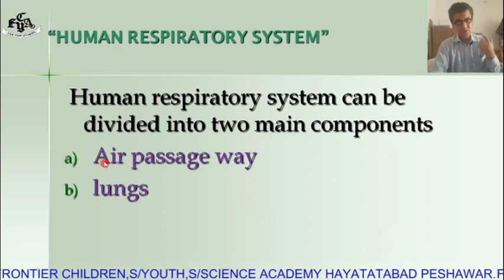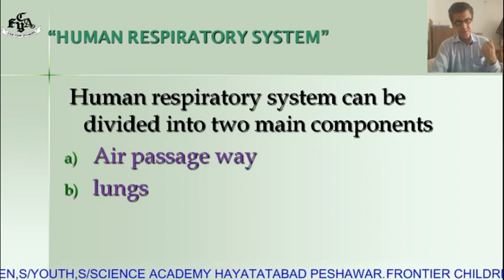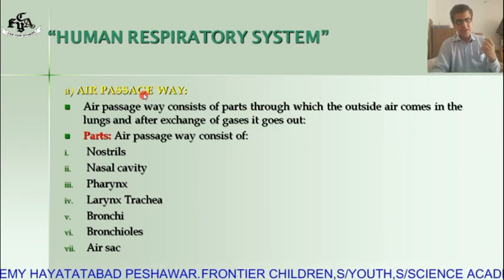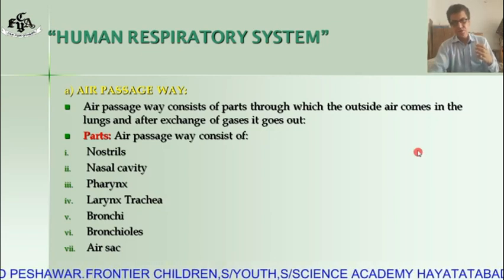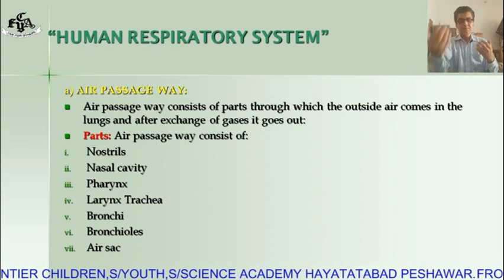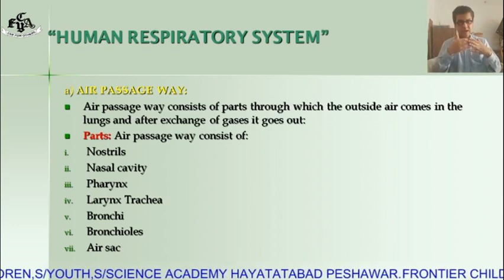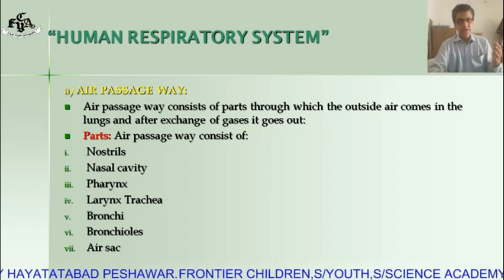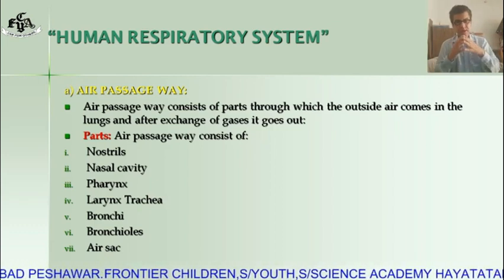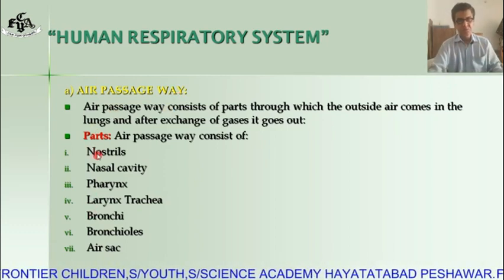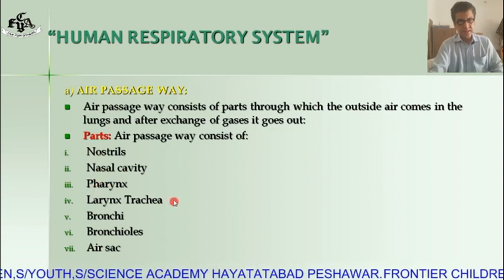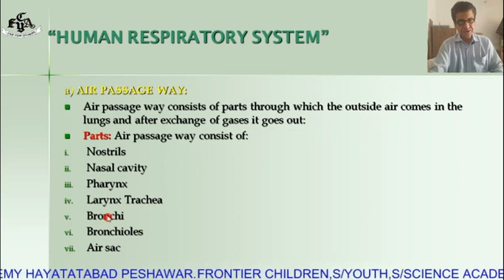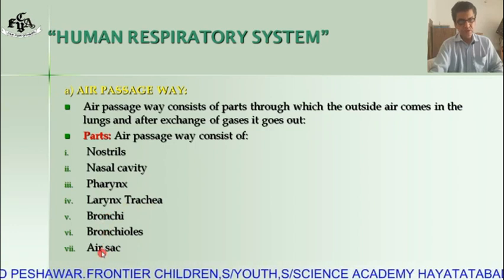First of all we will discuss the air passageway. The air passageway consists of parts through which outside air comes inside the lungs, and after exchange of gases it goes out. The different parts of the air passageway are: nostrils, nasal cavity, pharynx, larynx, trachea, bronchi, bronchioles, and air sacs.